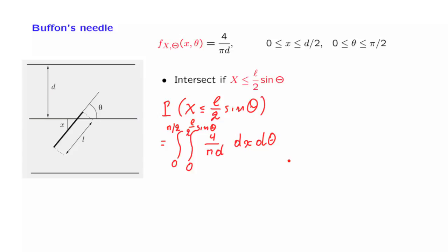And all we need to do now is to evaluate this double integral. Let's start with the inner integral. Because we're just integrating a constant, the inner integral evaluates to the quantity that we're integrating, the constant 4 over pi d, times the length of the interval over which we're integrating, which is L over 2 sine theta. Now we need to carry out the outer integral. Let us pull out the constants, which gives us 2L over pi d. Then the integral from 0 to pi over 2 of sine theta. The integral of sine theta is minus cosine theta. And we need to evaluate this at 0 and pi over 2. This turns out to be equal to 1. So the final result is 2L over pi d.